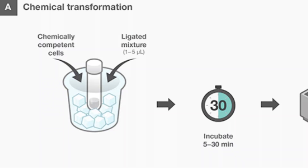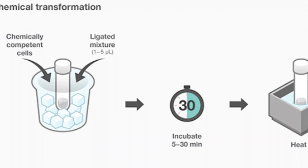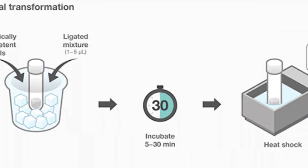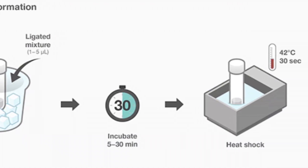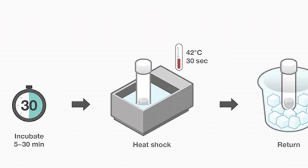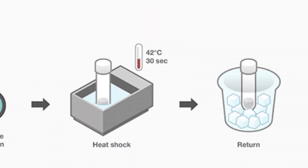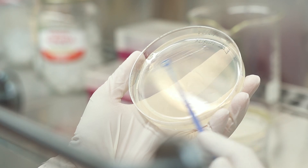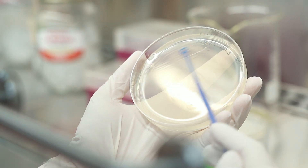Once the plasmids or buffer have been added to our bacterial test tubes, we perform something called a heat shock to get the plasmids into the bacterial cells. The tubes are held in an ice bath for anywhere between 5 to 30 minutes, then quickly placed in a 42°C water bath for about 30 seconds. This sudden change in temperature and the heat itself creates increased permeability in the bacterial membrane, allowing the cells to take up these plasmids from the surrounding solution. We then return the tubes to an ice bath before transferring the bacterial solution onto our nutrient agar plates.